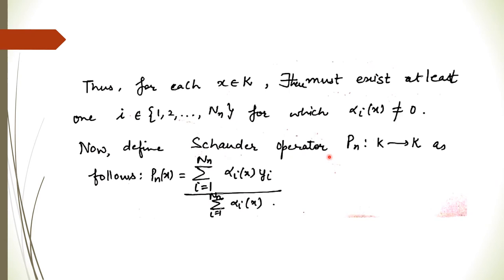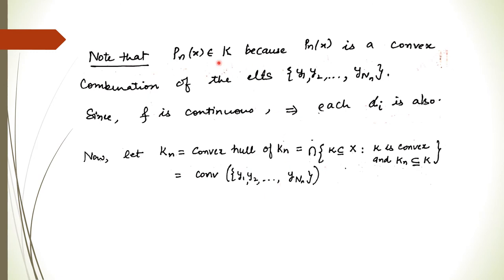We can now define the Schauder operator P_N as a mapping from K to K: P_N(X) = Σ α_i(X) · Yi / Σ α_i(X). Since F is continuous, each α_i is also continuous, because α_i is the max of (1/N − ‖F(X) − Yi‖) and 0 — either it is zero or a difference involving the continuous function F. So α_i is a continuous function.